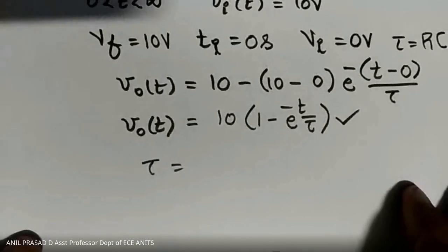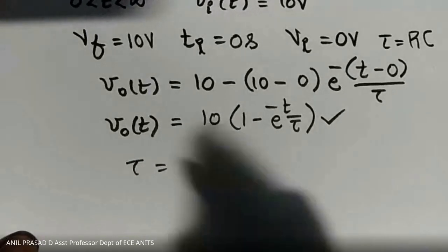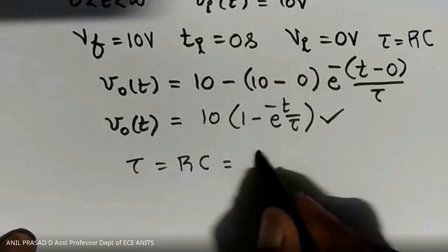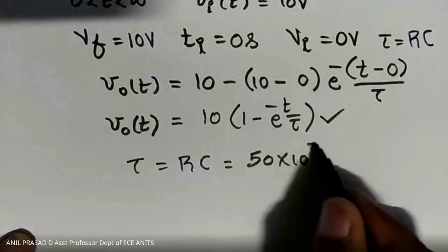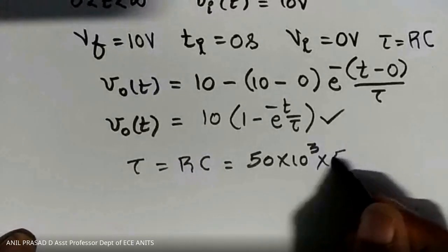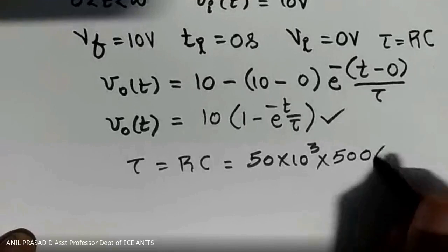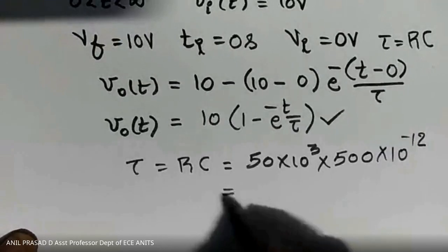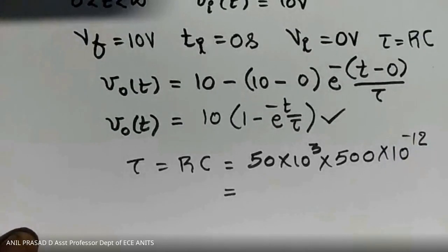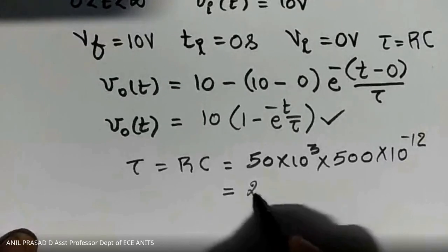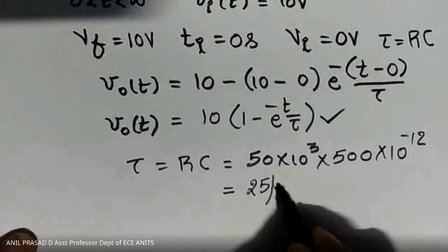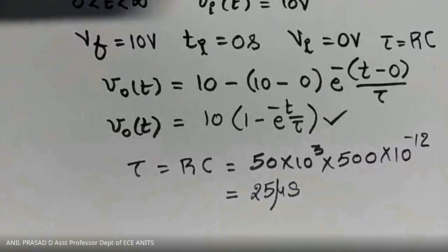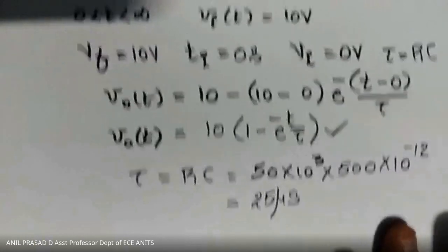Now we calculate tau. Tau equals RC, where R is 50 kilo-ohms and C is 500 pico-farads (10 to the power of minus 12). Therefore tau equals 25 microseconds.